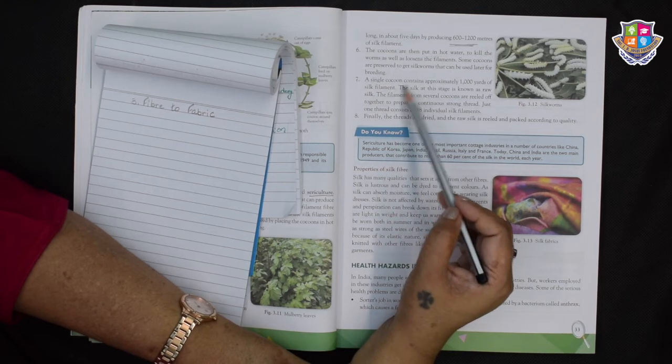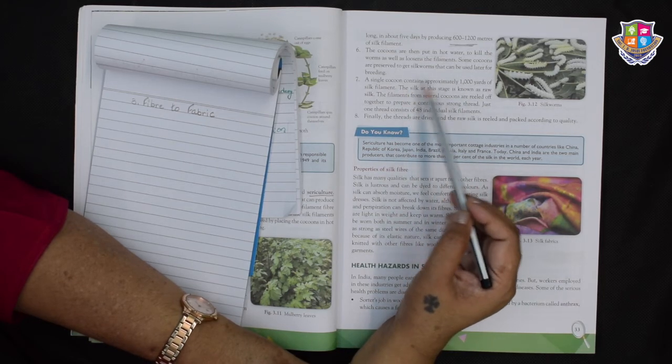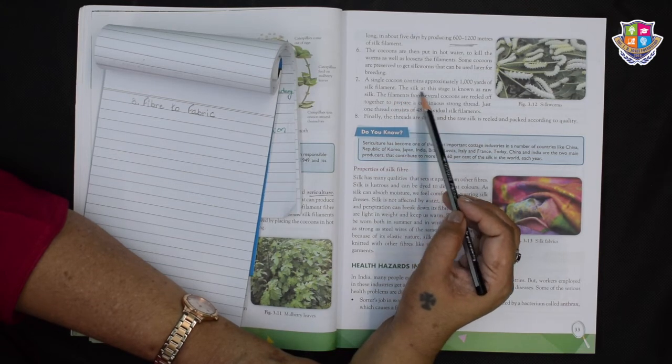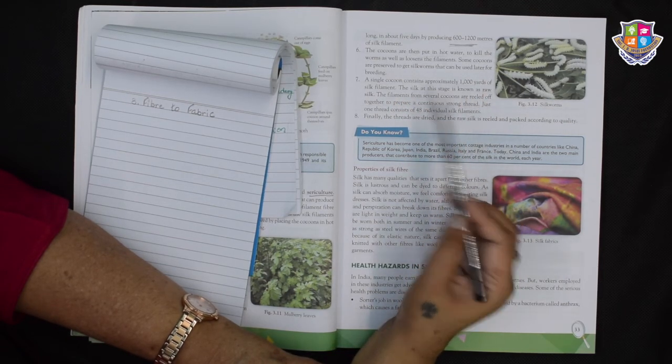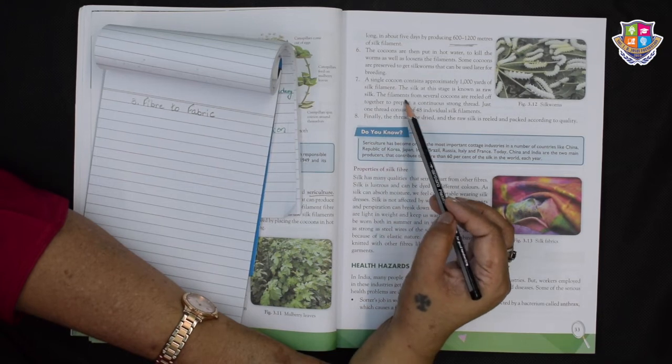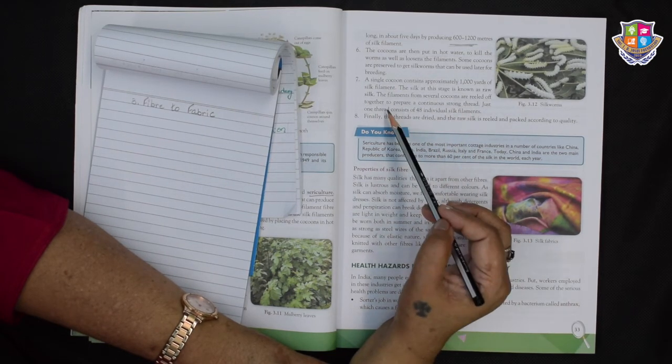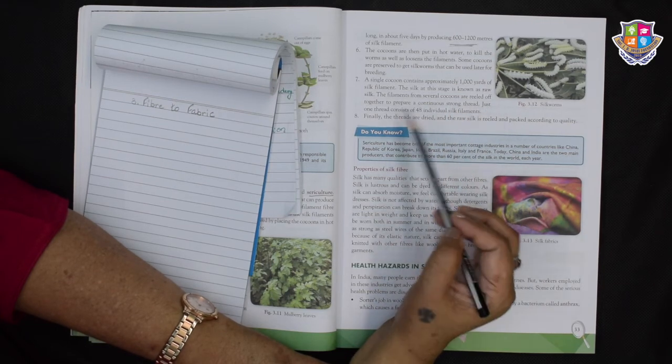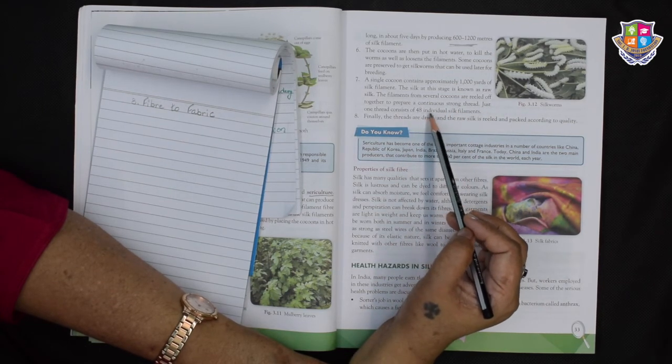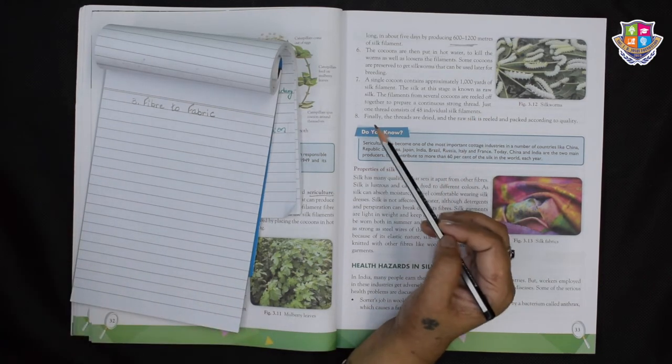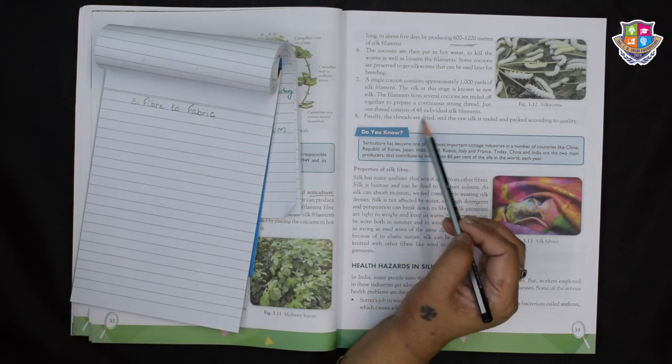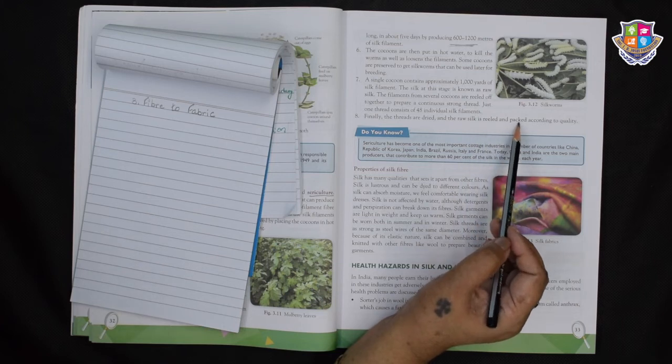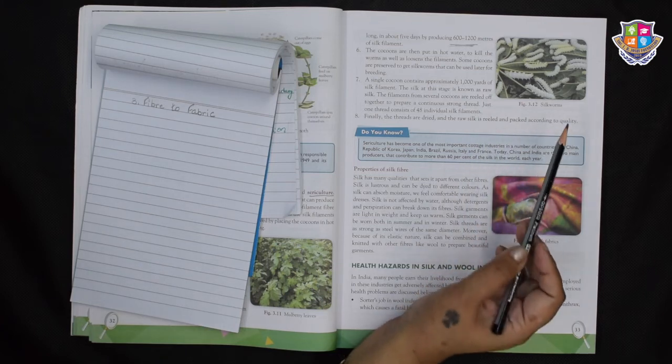A single cocoon contains approximately a thousand yards of silk filament. This is quite a huge expanse of silk, isn't it? The silk at this stage is known as raw silk. The filaments from several cocoons are reeled off together to prepare a continuous strong thread. Just one thread consists of 48 individual silk filaments. Finally, the threads are dried and the raw silk is reeled and packed according to quality.